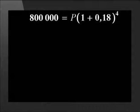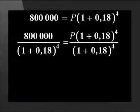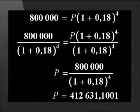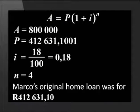800,000 equals P times (1 plus 0.18) to the power of 4. This gives us an answer of 412,631.10. This means that Marco's original home loan was for 412,631.10. The bank almost doubled their money.